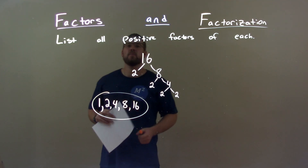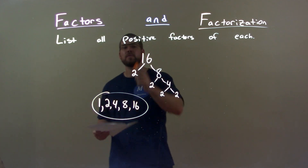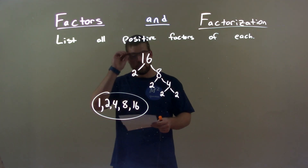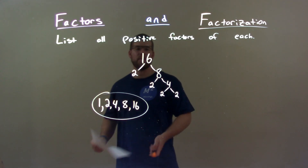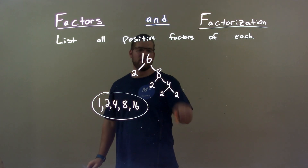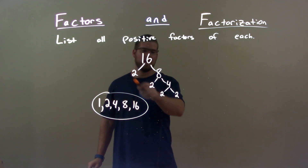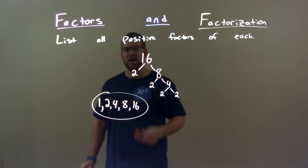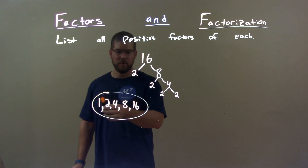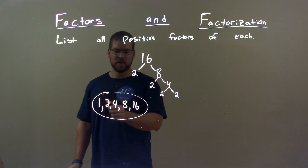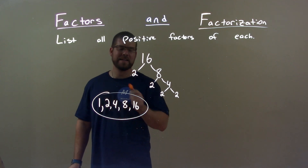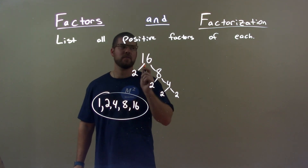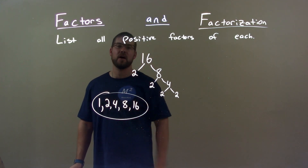Quick recap: we were given the number 16 and listed all the positive factors. I did my prime factorization and got a whole bunch of 2s, then went through my numbers and found that 1, 2, 4, 8, and 16 are all positive factors of 16.